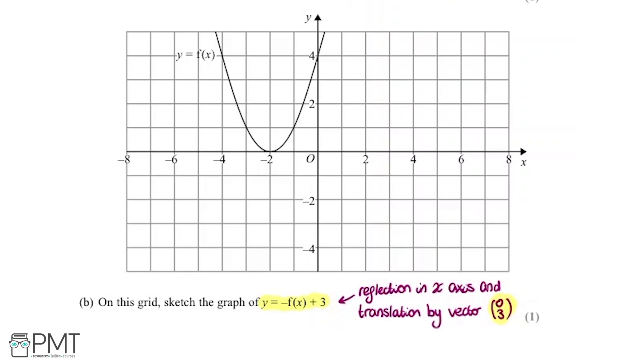A little reminder of what this vector notation means. So it's laid out like this. The top number represents left, right, and the bottom number represents up, down. So in this case, we've got 0 on the top, so no left and right, and we've got 3 on the bottom, up and down. So therefore, we're going to translate up by 3.